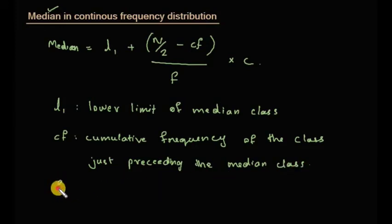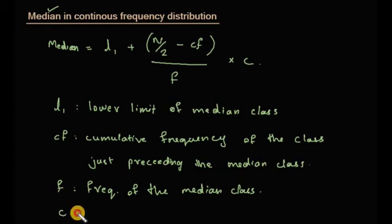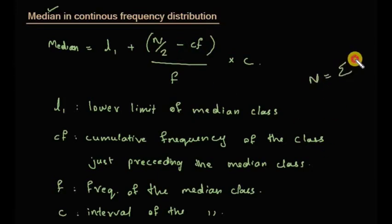F is the frequency of the median class, and C is the class interval of the median class. N is equal to sigma F, that is the sum of all frequencies.